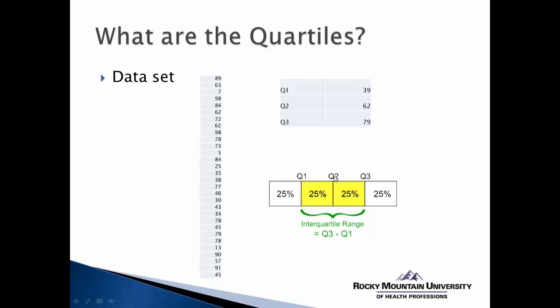The second quartile score, or the 50th percentile — in this case 62 — divides the distribution in half. So 50% of the scores will be below 62, and 50% of the scores will be above 62.